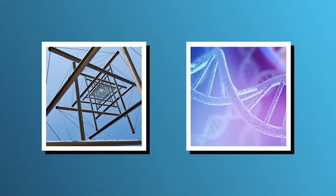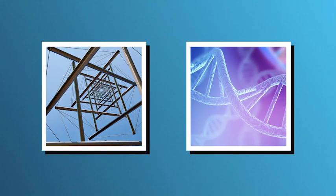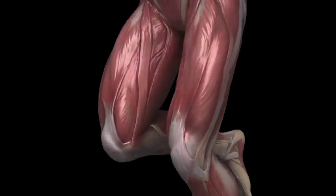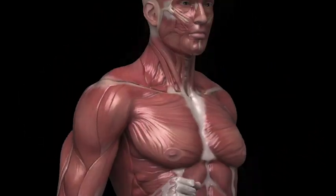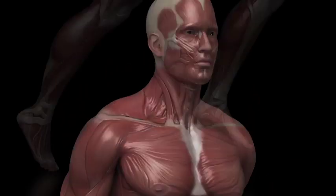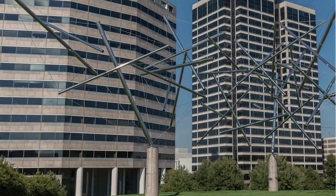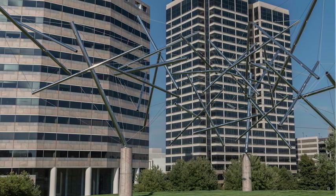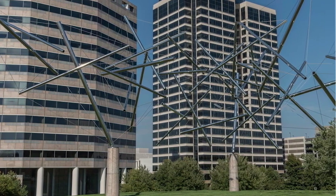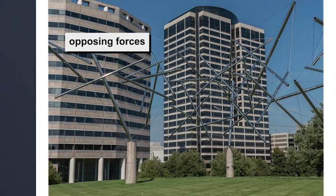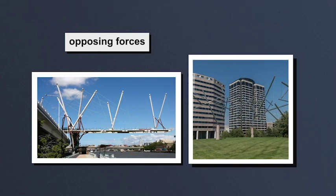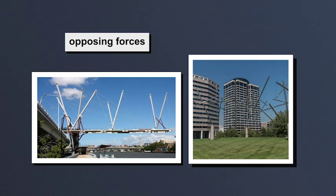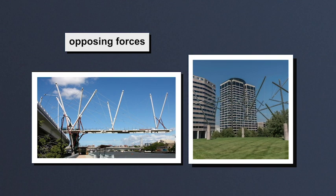Tensegrity is found in art, nature, and even in our bodies. Tendons and muscles stretched across bones create a tension and compression system that helps us move. Contemporary sculptor Kenneth Snelson used the term 'floating compression' to describe the effect that these opposing forces create. That's the illusion created here in the Kurilpa Bridge, which opened across the Brisbane River in Queensland, Australia in 2009.